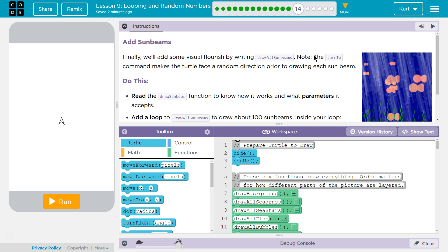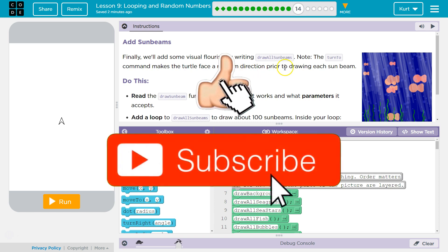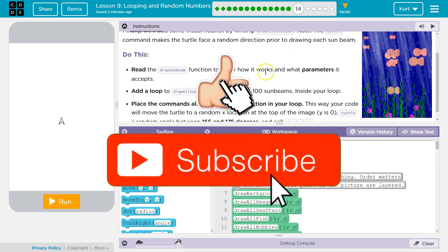Finally, we'll add some visual flourish by writing draw all sunbeams. The turn2 command makes the turtle face a random direction prior to drawing each sunbeam.